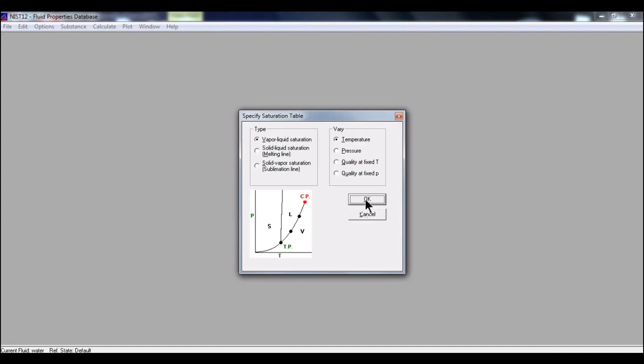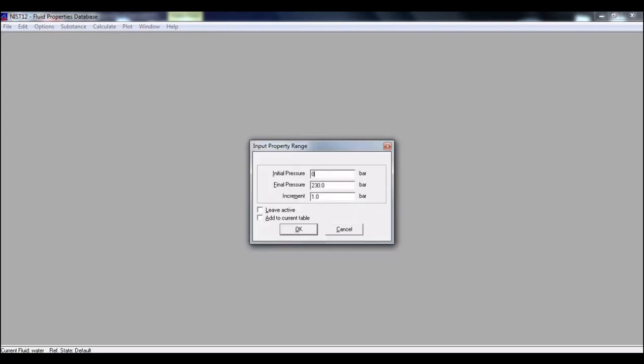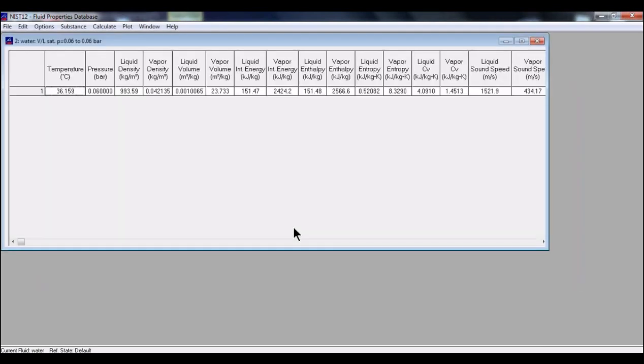So now I can go over here and calculate a saturation curve because my second state is saturated liquid or gas coming out, it's steam saturated steam. So I'm going to vary my pressure, say okay, and my initial pressure is 0.06 bar, my final pressure is also 0.06 bar. Saturated is going to be 36.159 degrees Celsius and my vapor enthalpy right here is 2566.6 kilojoules per kilogram and that's what we will be using on our problem.